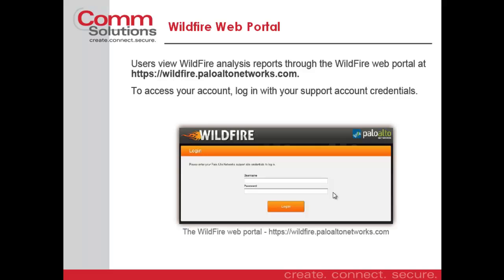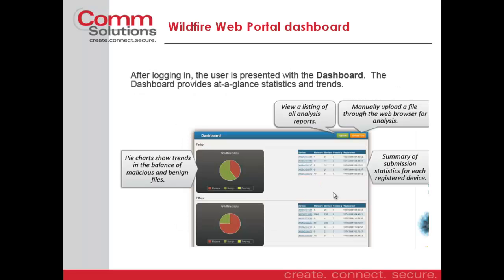We get to the WildFire portal by going to https://wildfire.paloaltonetworks.com. We use our support account to log in through the portal, and from there we're presented with a dashboard that shows today and the last seven days based on serial number, giving us a summary of the submissions for everything we sent.